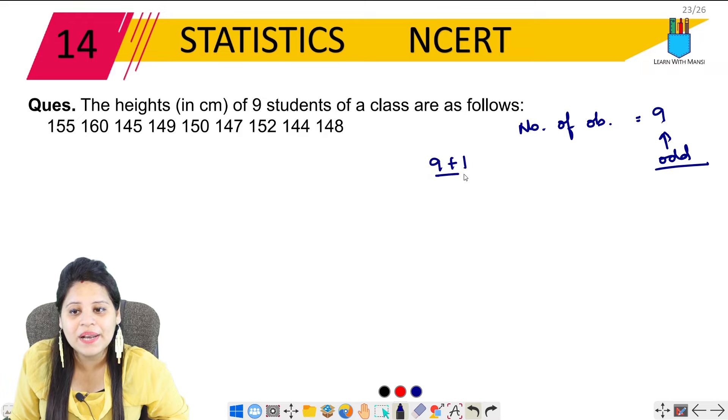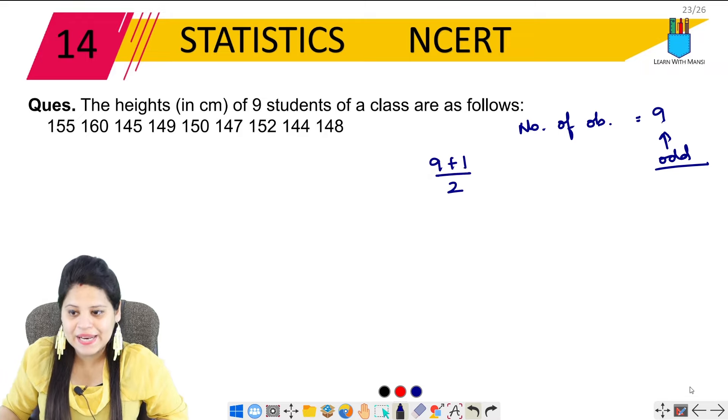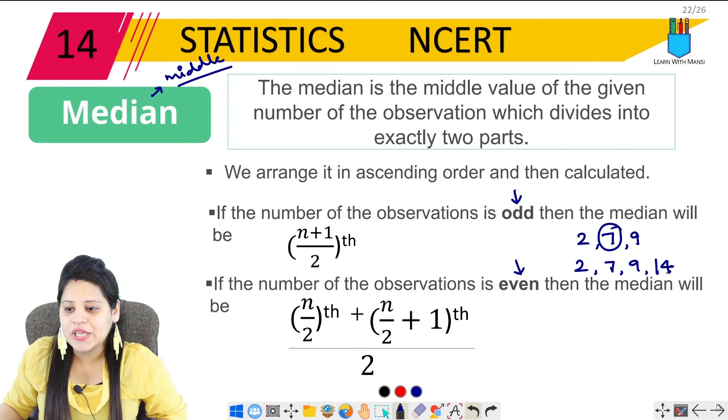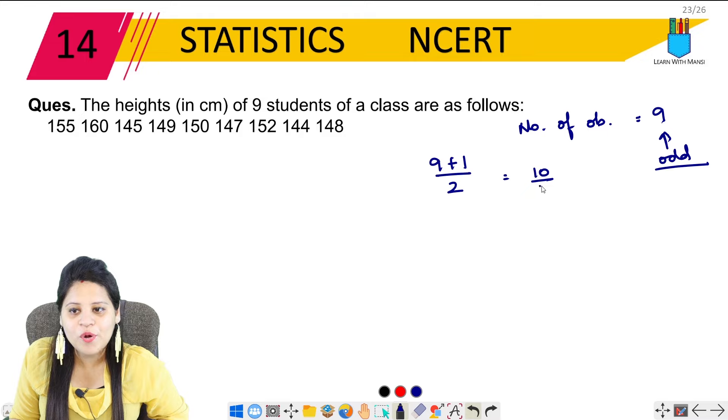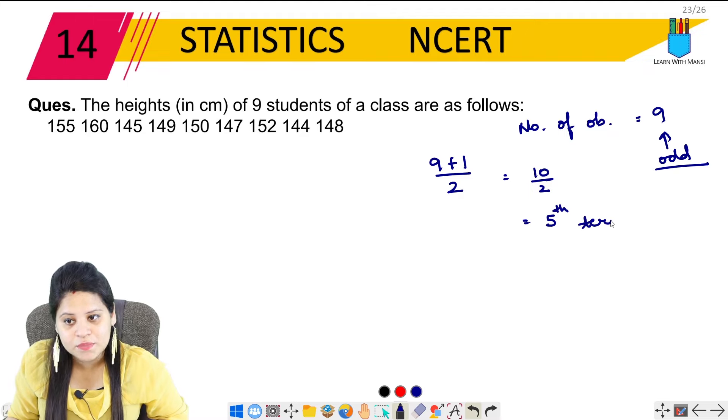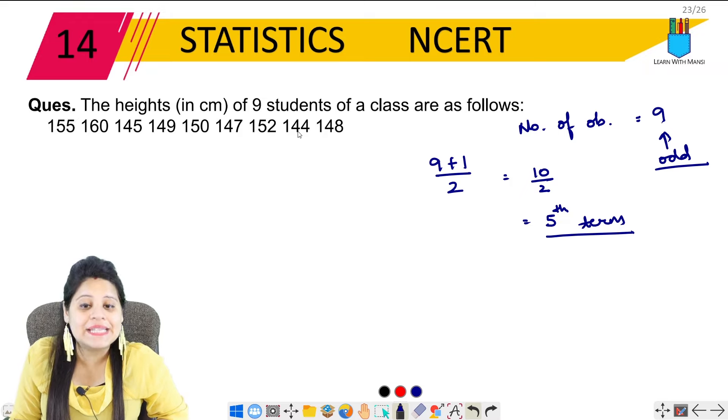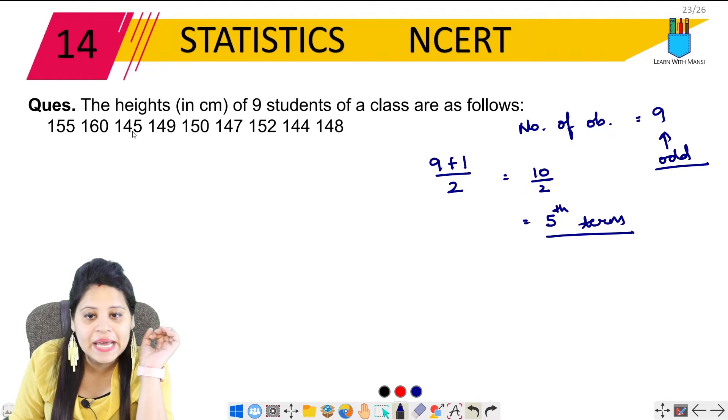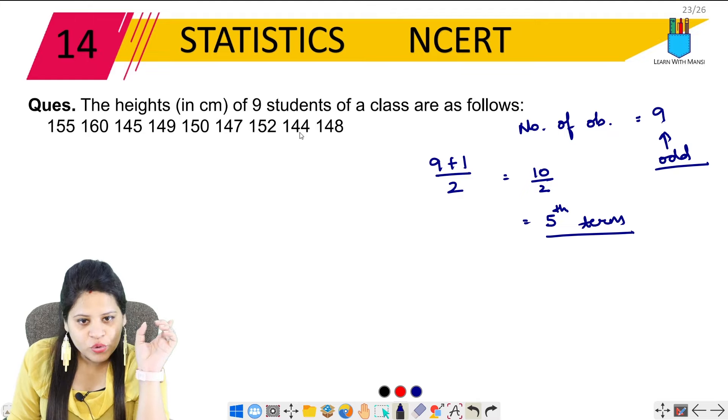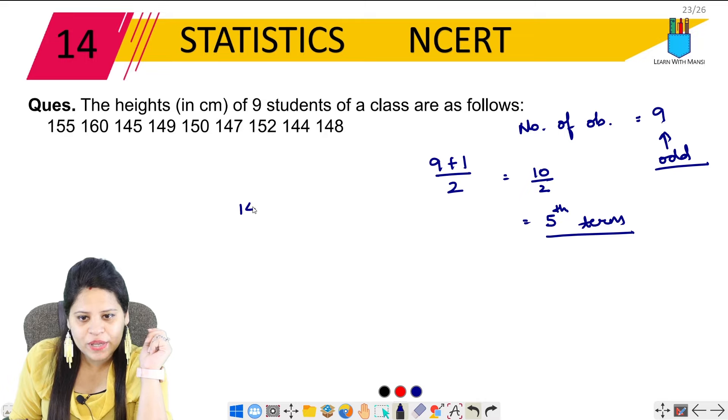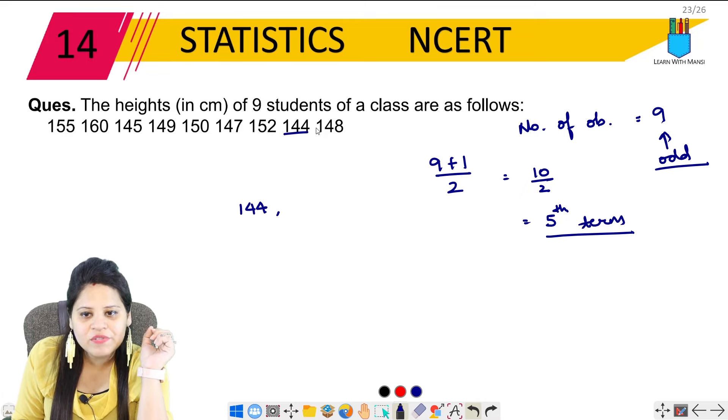So here when it is odd, our formula is N plus 1 upon 2th term. This is not the answer, N plus 1 upon 2, this is the term number. Similarly for even: N upon 2th plus N upon 2 plus 1th term upon 2. I know it looks complicated but it is very simple. So directly we get to the question. Here the heights of 9 students of a class are as follows.